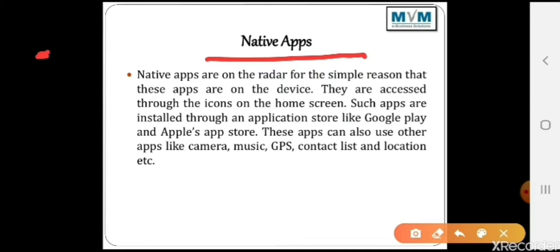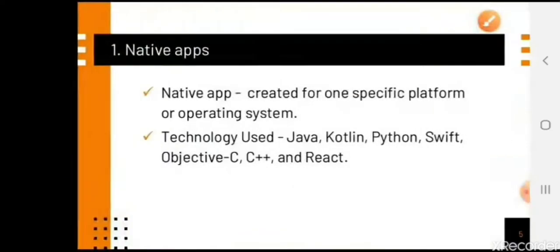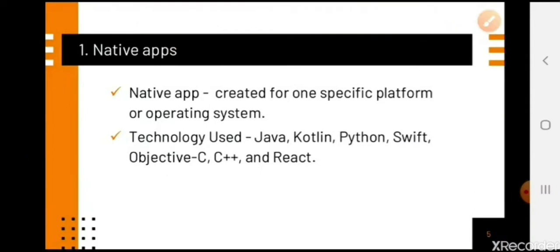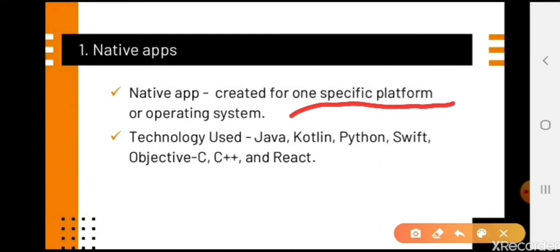Native applications are mostly designed for a specific operating system. Some native applications can run on devices without the use of internet, while others may need internet for full functionality. They are designed for a particular platform and are expensive to develop and maintain. The technology or languages used include Java, Python, Swift, C, and C++ — these languages are used most popularly for native app development.